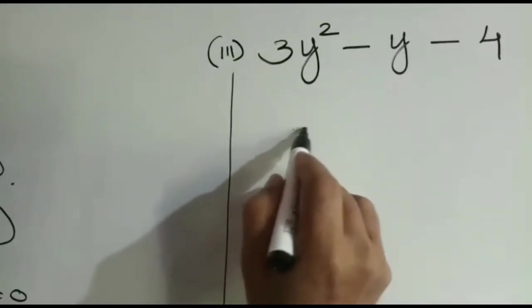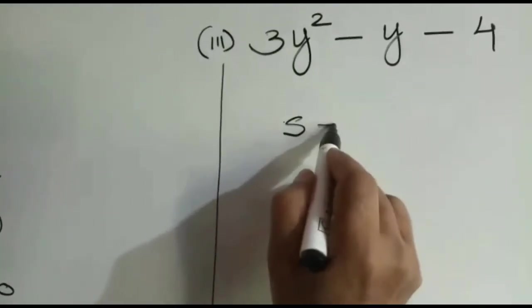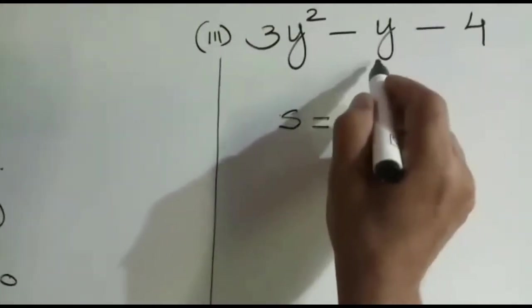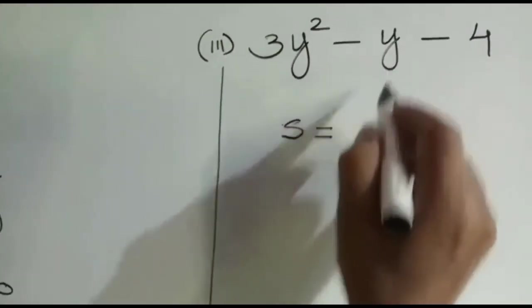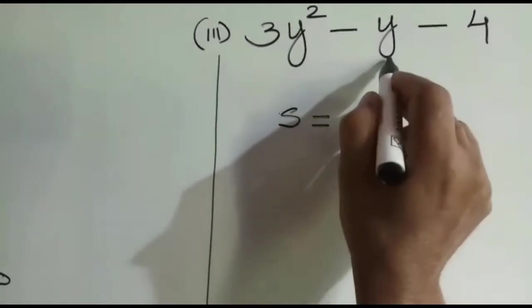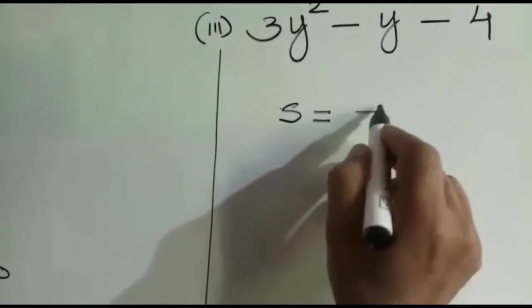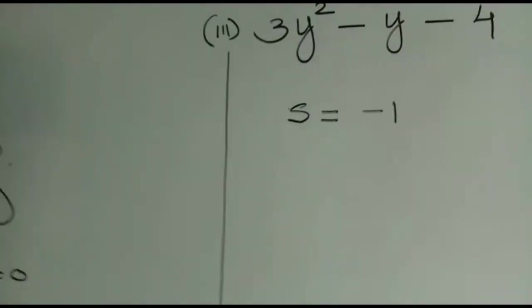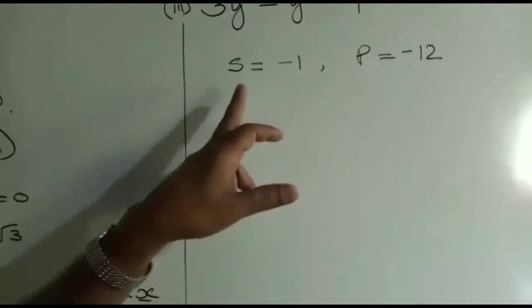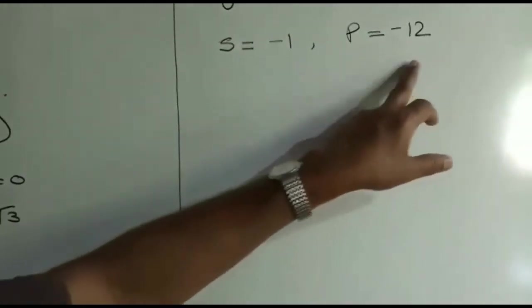Therefore, identify the sum. The sum is the coefficient of the middle term. That is, the middle term is y, the coefficient is -1. The sum is -1 and the product is -12.